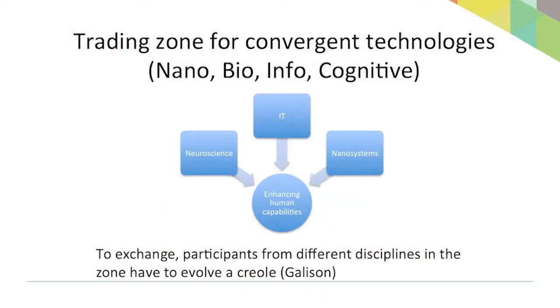In effect, you're building a kind of T-shaped expertise together — you're teaching each other in a trading zone enough so you become T-shaped experts and can work together. As a simple example, I'm interested in nanotechnology and convergent technologies — the idea that nano, bio, info, and cognitive will converge. You're going to need dozens of kinds of expertise: nanoscientists, folks from IT, people with systems knowledge, ethicists, and social scientists in the trading zone.